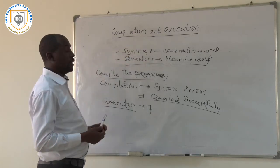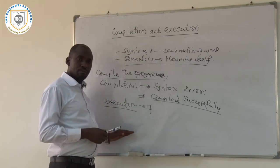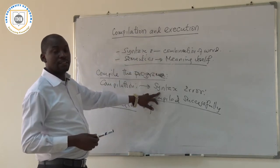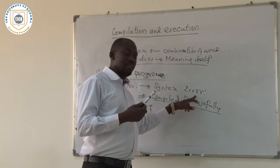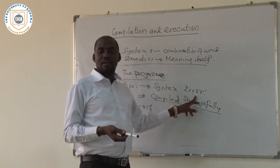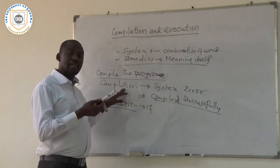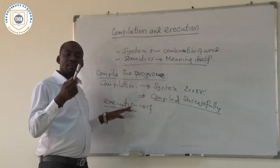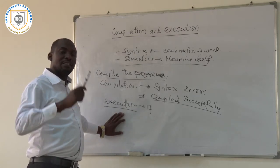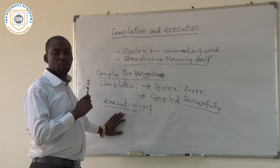But most students, when they write a program and compile it and get that the program is syntactically right, they always become happy that they now have the right program. No. You may be having a program which is syntactically right but semantically not right, which means that it doesn't give you the intended outcome or output.